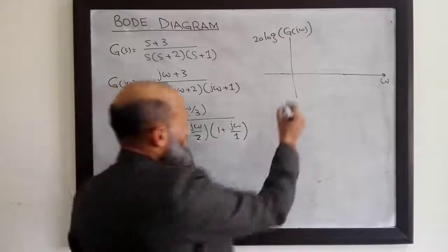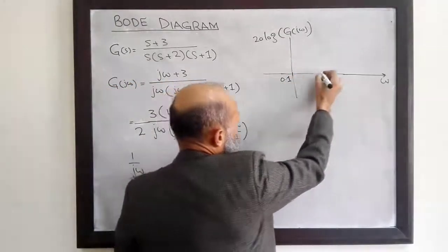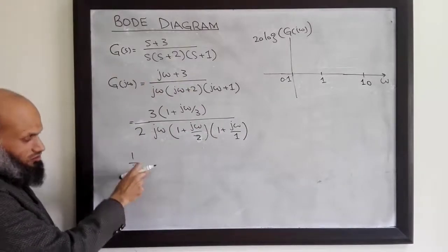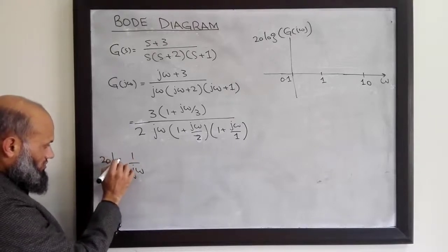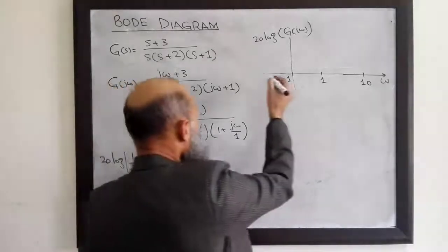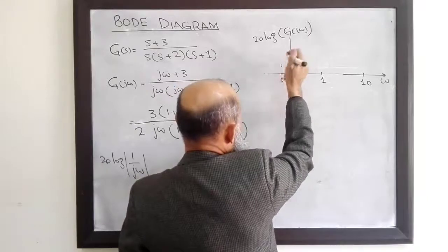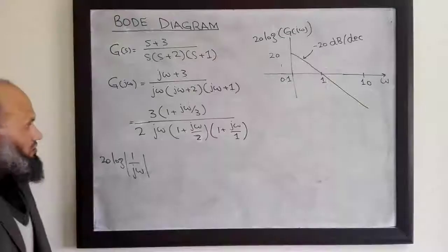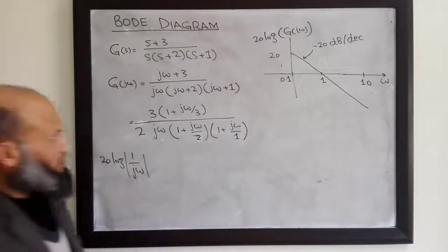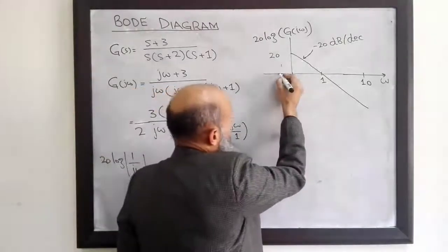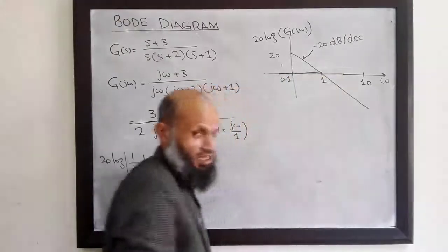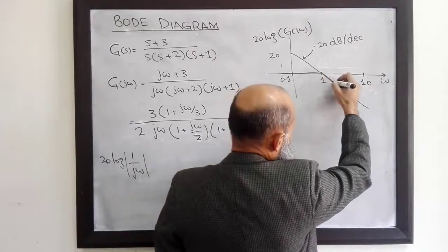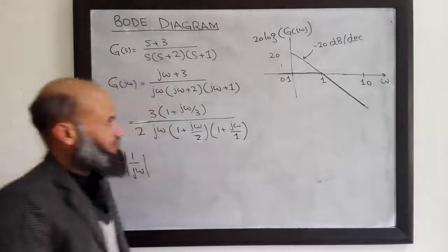For omega equal to 1, the magnitude is 0 dB. Let's start our graph from omega equal to 0.1, with 1 and 10 marked on the axis. At omega equal to 0.1, the magnitude of this factor is 20 dB, and then it drops with a slope of minus 20 dB per decade. The magnitude plot for this factor shows that at low frequency the magnitude is 0 dB, and at high frequency it drops with a slope of minus 20 dB per decade after the corner frequency.